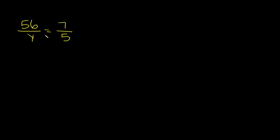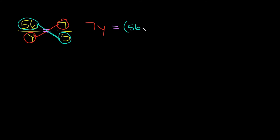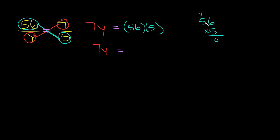Again, the first way we're going to solve this is by cross multiplying. Draw your cross. We're going to multiply y and 7 together: 7 times y, set equal to our other cross — 56 times 5. Let's simplify: 7y on the left. For the right side, 56 times 5 — 6 times 5 is 30, 5 times 5 is 25, plus 3 is 28 — so that's 280. So 7y equals 280.